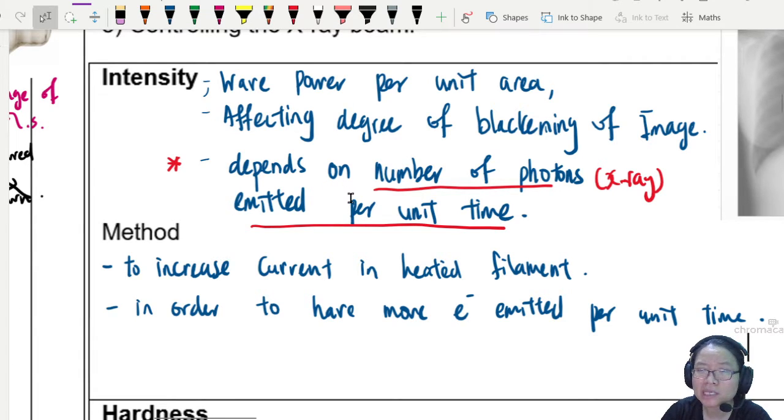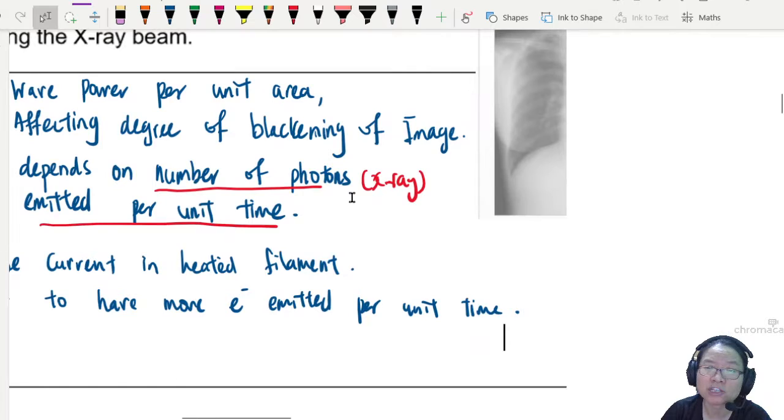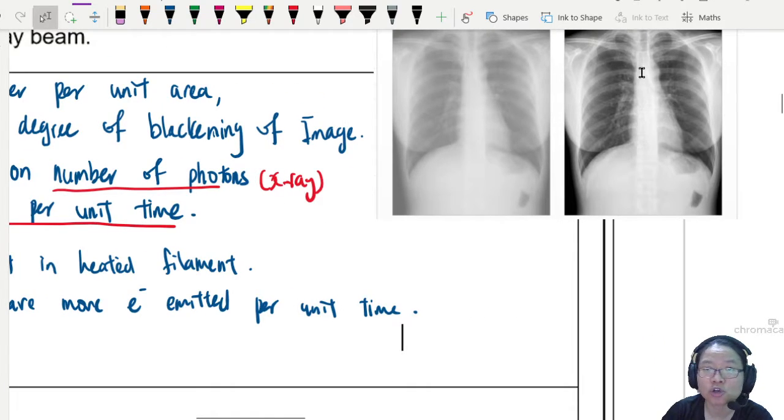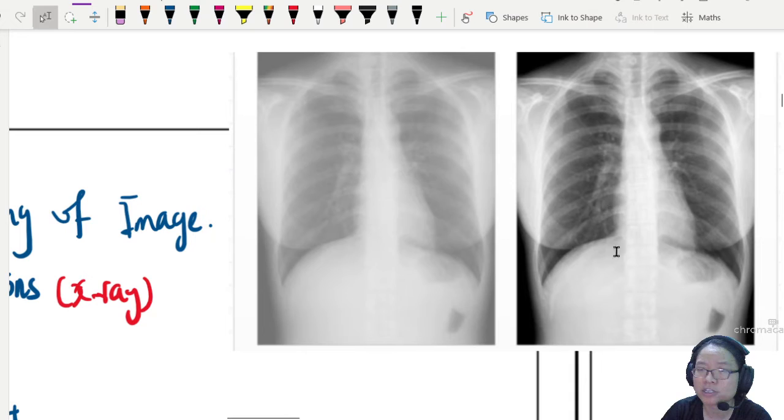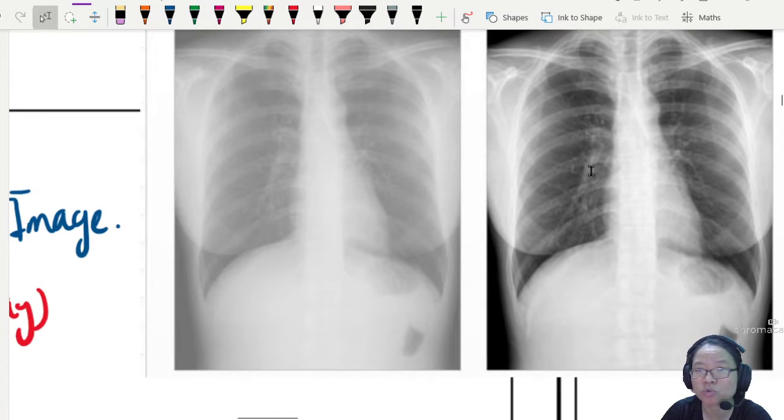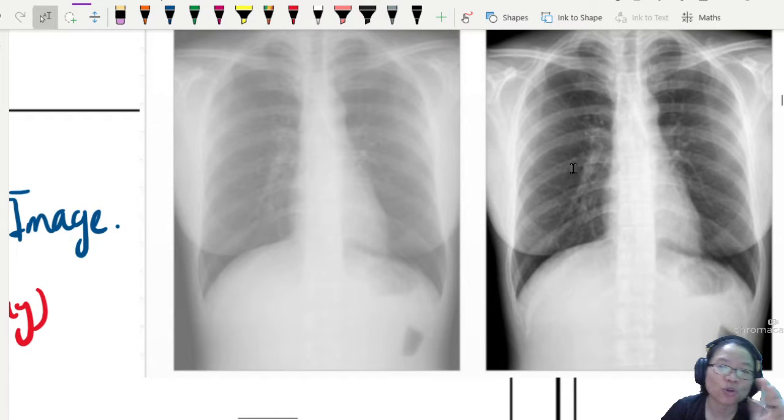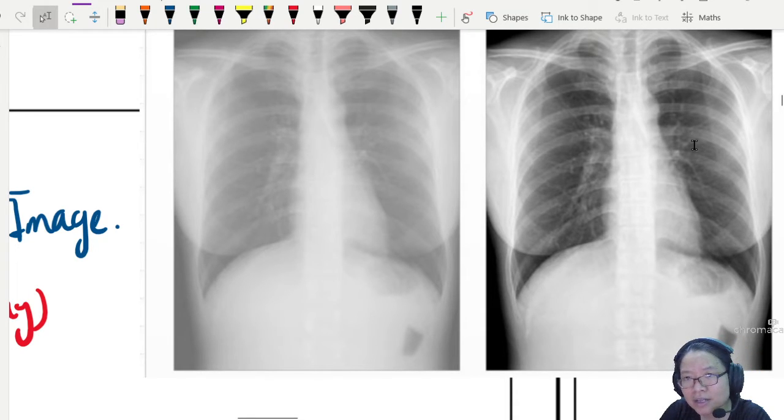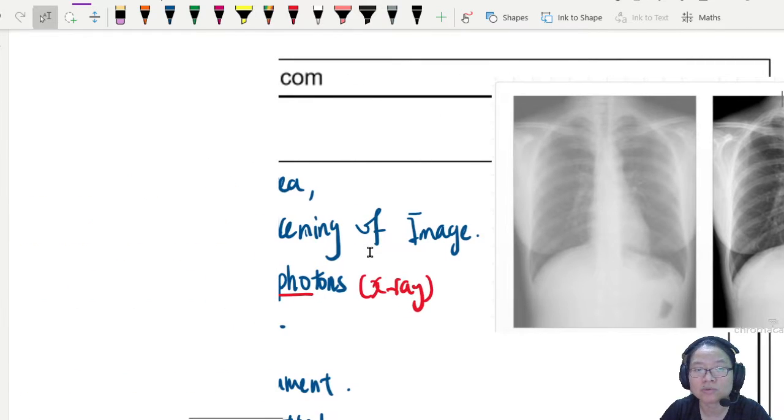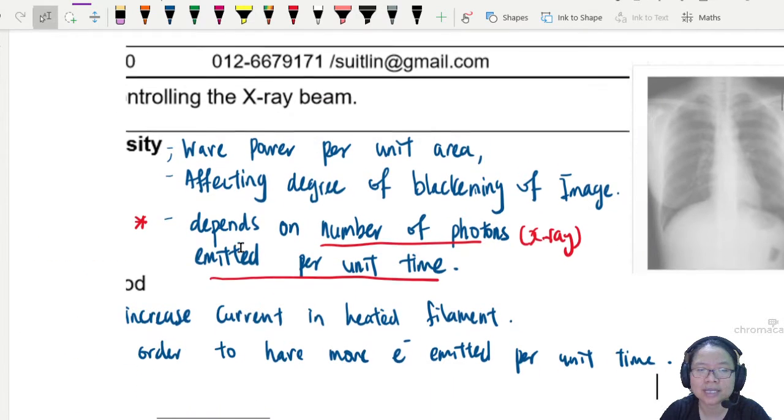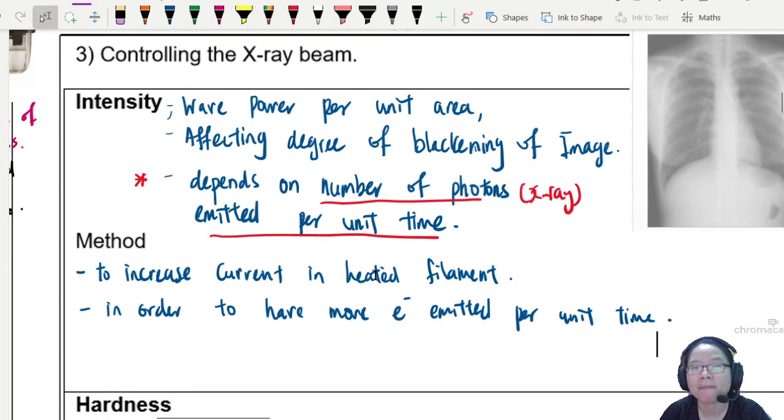How intense do we want it to be really depends on how much contrast is necessary. Sometimes we need good contrast. This allows us to look into the lung structure, all these little lines, but still not enough good contrast. So we can adjust the contrast depending on what is needed by adjusting the current in the heated filament.